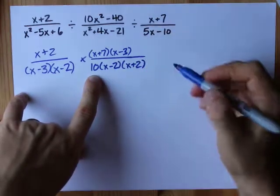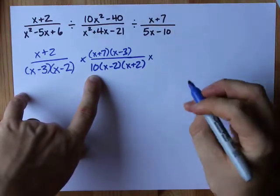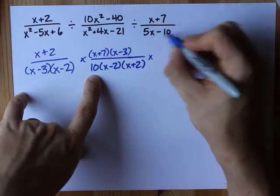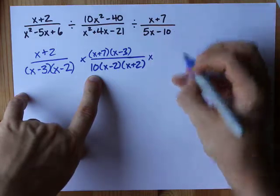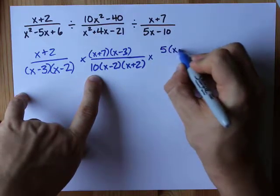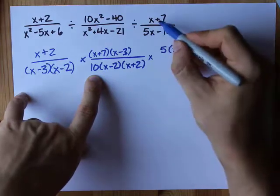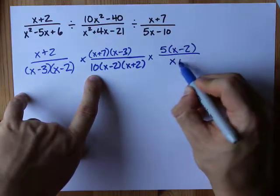Oh another division. Damn it. multiplying by the reciprocal. Pulling five out of both of these gives me five x minus two and the x plus seven gets written on bottom of the new fraction.